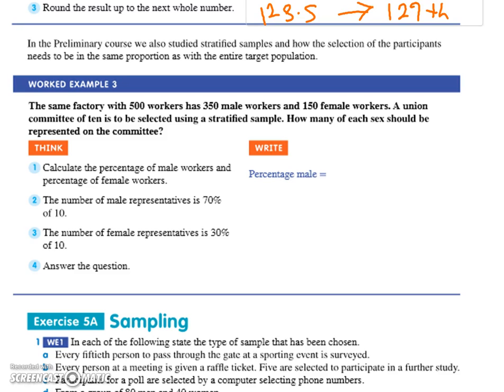Okay, this one we're doing a stratified sample. We've still got a factory of 500 people, but this time we're doing a stratified sample and we want 10 out of the 500. Of this 500, 350 of the people there are male and 150 people are female.